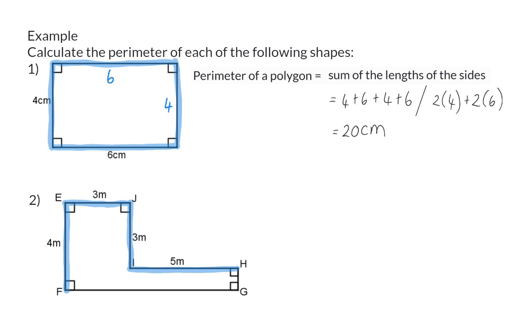But we can see that side FG firstly consists of three meters, similar to right across from it, and then another five meters. So in total FG is eight meters. And then working with the four meters of EF we can say that side HG should be another one meter, so that the two vertical sides on the right add up to the same total as the side right across from it.